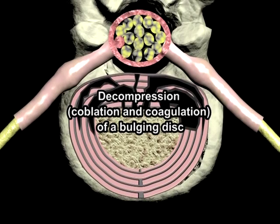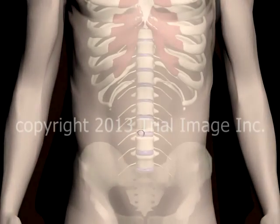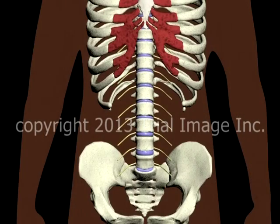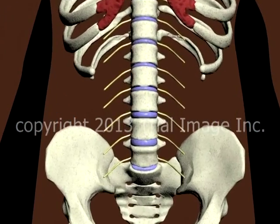This is Dr. Cal Shipley with a review of decompression of a bulging disc. As an example today, we're going to take a look at a bulging intervertebral disc between the 4th and 5th lumbar vertebra in the low back.